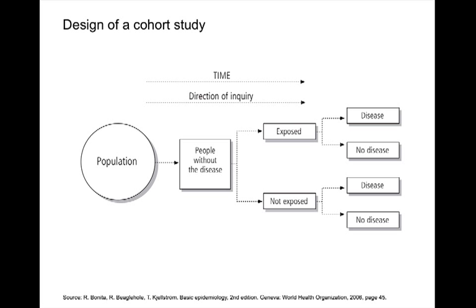This slide depicts the general design and nature of a cohort study. It may appear similar to that in an experimental study, in that a population is identified and we look at people without disease — we exclude people from that population who may have disease. However, we do not randomly allocate people into an exposure or non-exposure group, but simply determine at the start of the study whether or not people are exposed to a particular factor of interest.